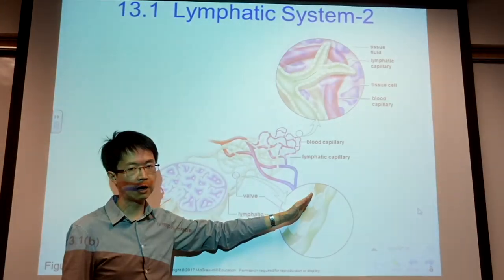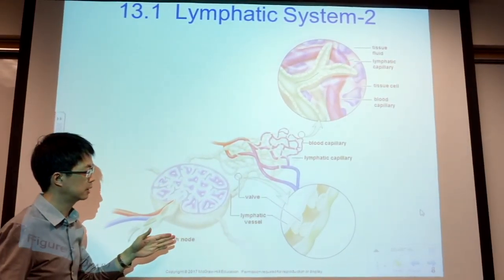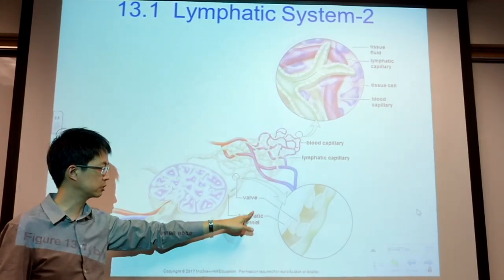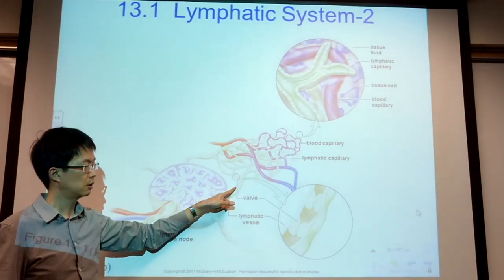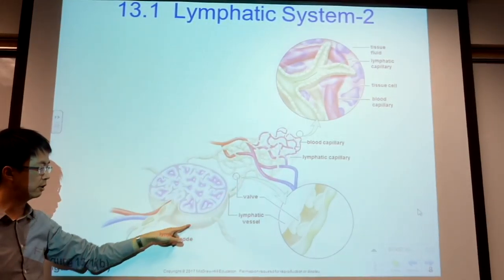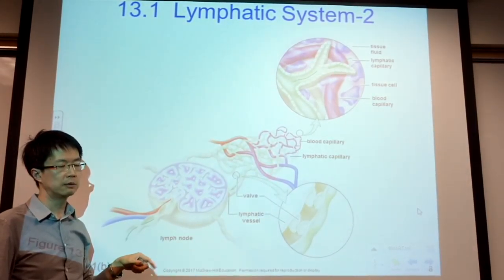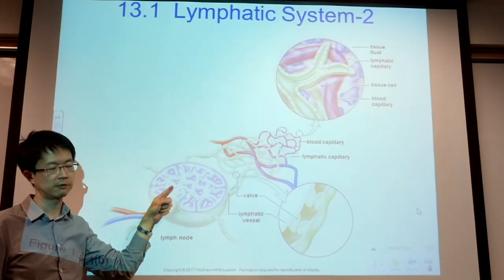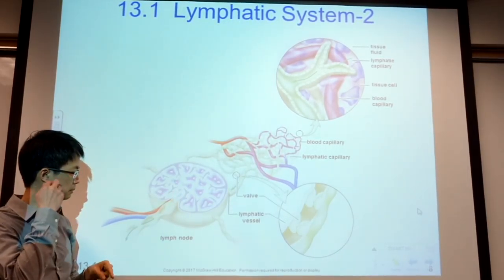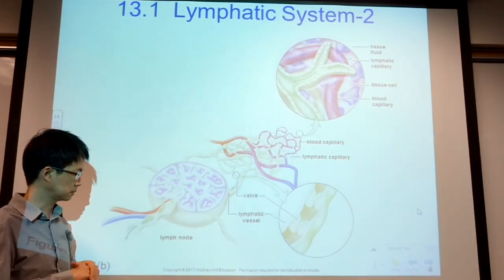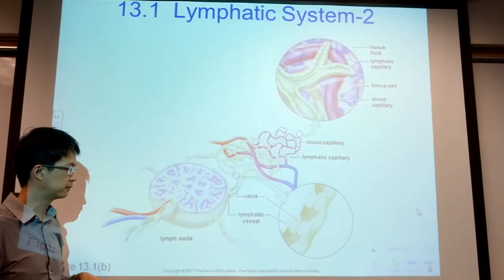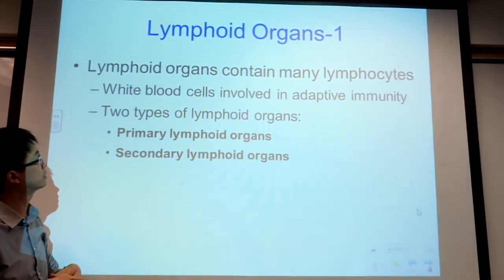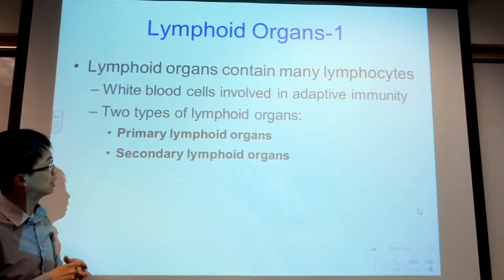The convergence of lymphatic capillaries will become lymphatic vessels. Lymphatic vessels bring the lymph — the filtered body fluid — into lymph nodes. Lymph nodes are where a lot of immune action occurs; many lymphocytes battle and fight infection there. Lymph nodes also have a blood supply.